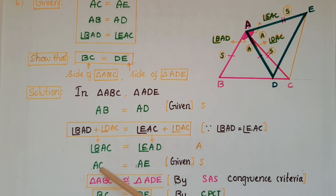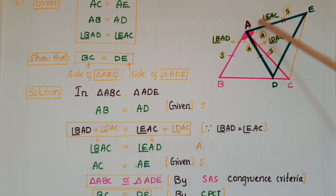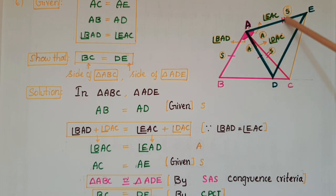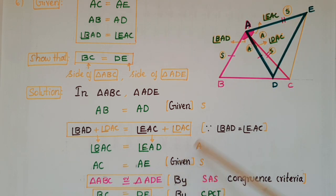And AC is equal to AE. This side is a side of triangle ABC and AE is the corresponding side of triangle ADE. These two sides are equal. That is also given.